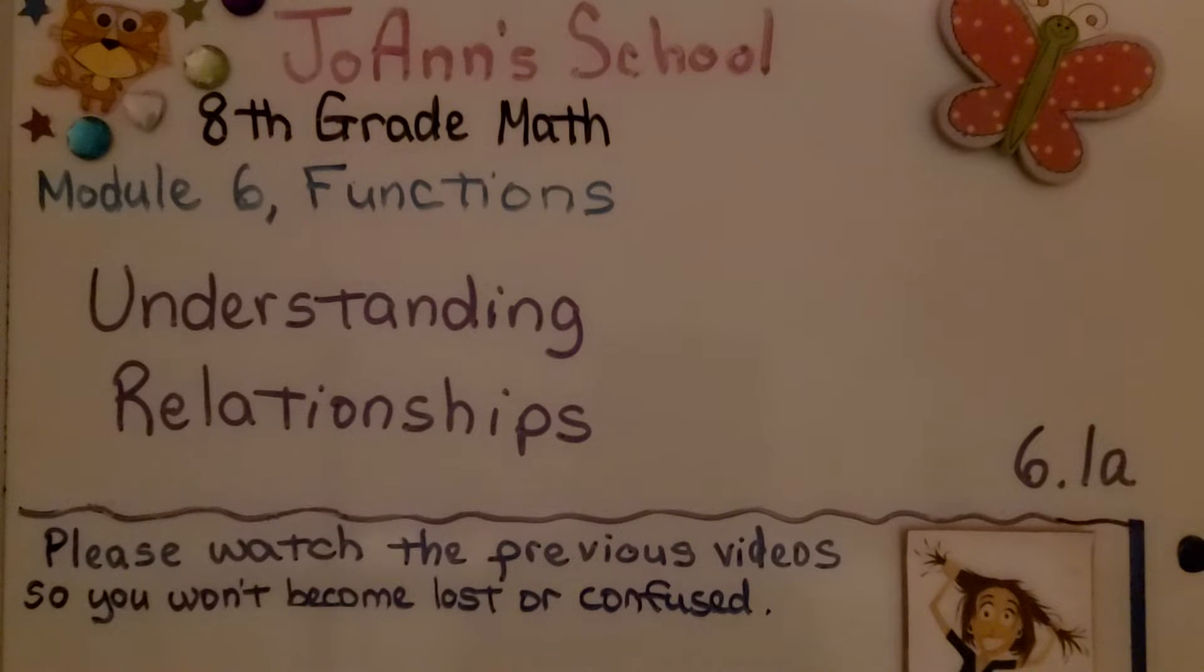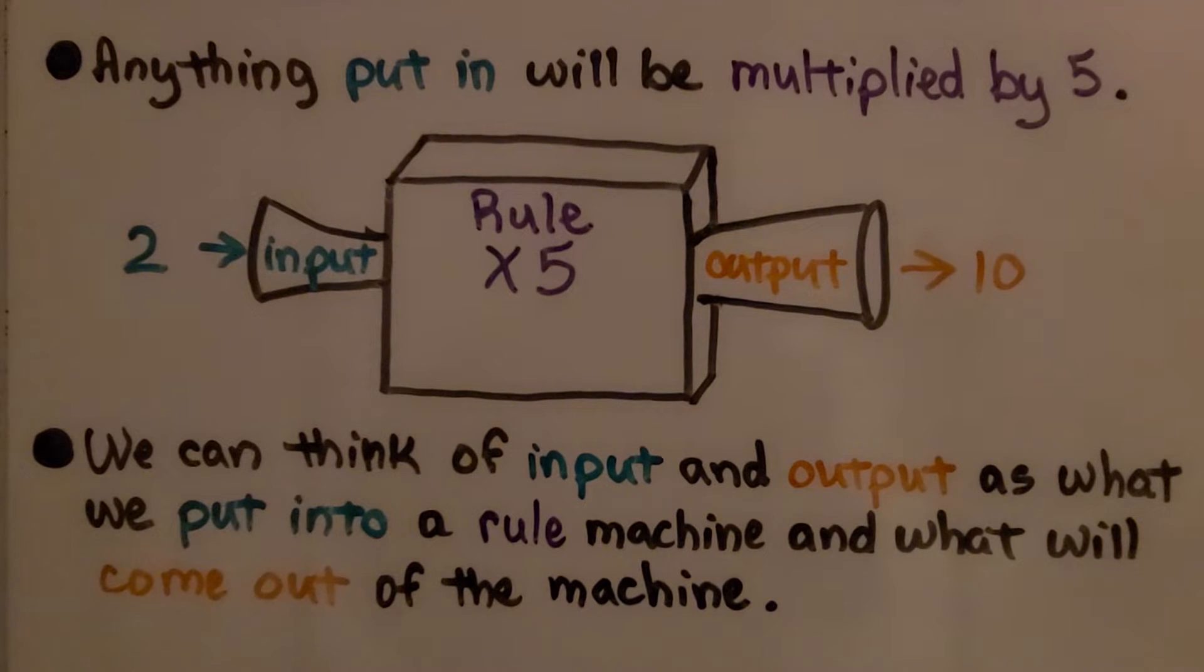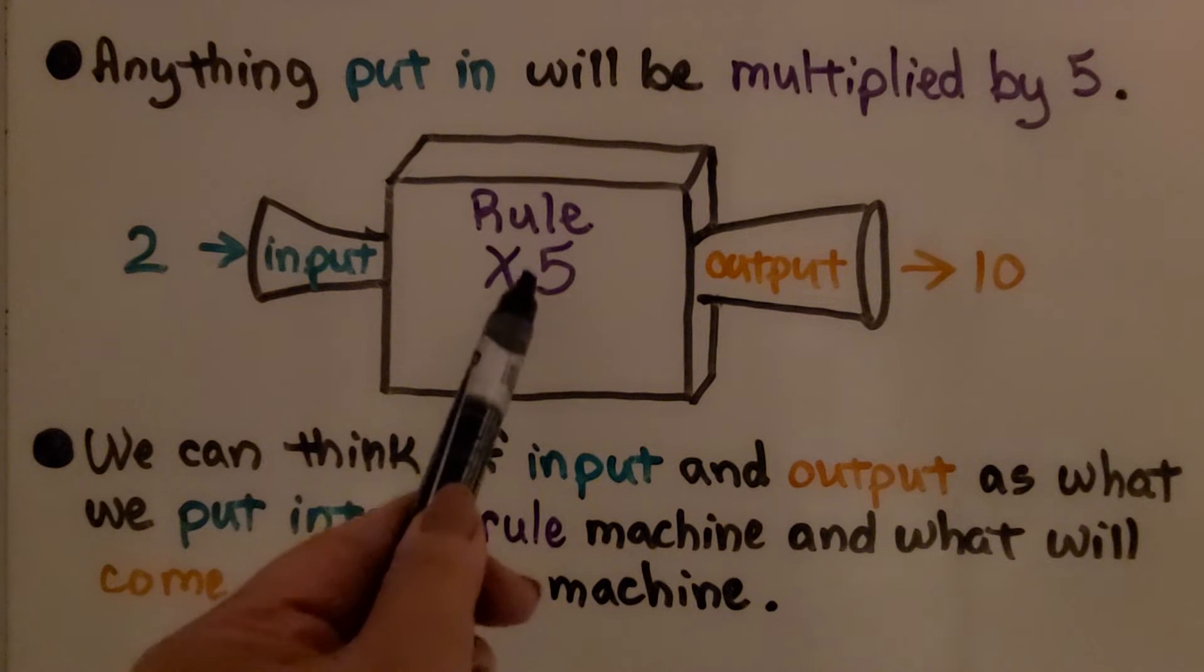We're now in Module 6 about functions. We're going to talk about understanding relationships in 6.1a. So take a look at this machine I drew. Anything put in will be multiplied by 5. That's the rule.